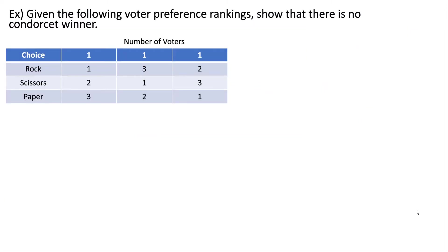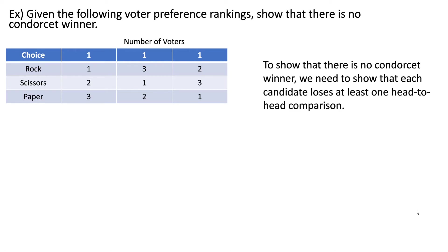Let's look at another example. Given the following voter preference rankings, we want to show that there is no Condorcet winner. To do this, we need to show that each candidate loses at least one head-to-head comparison, because if a candidate loses even a single head-to-head they're automatically disqualified from being a Condorcet winner. So the easiest way to approach this is to try and show everybody losing at least once.